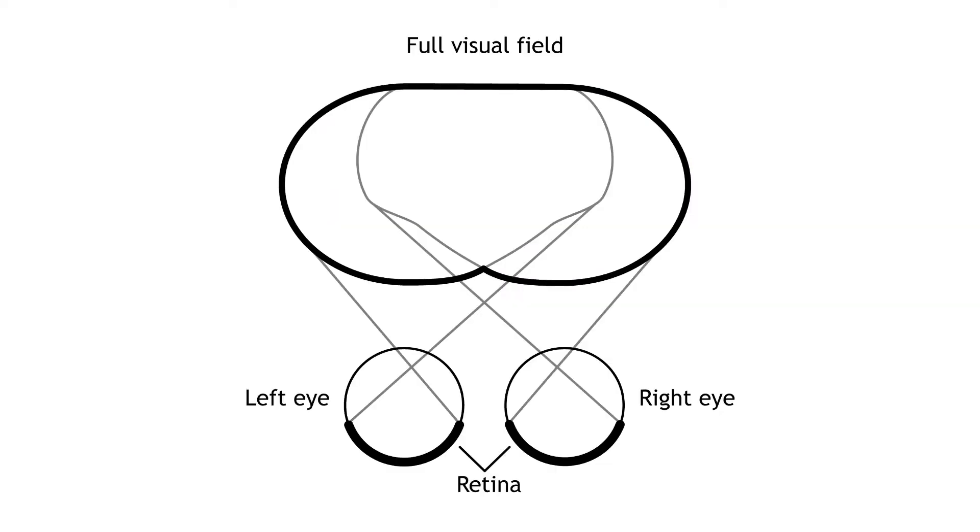Before learning the pathway that visual information takes from the retina to the cortex, it is necessary to understand how the retina views the world around us. The full visual field includes everything we can see without moving our head or eyes.